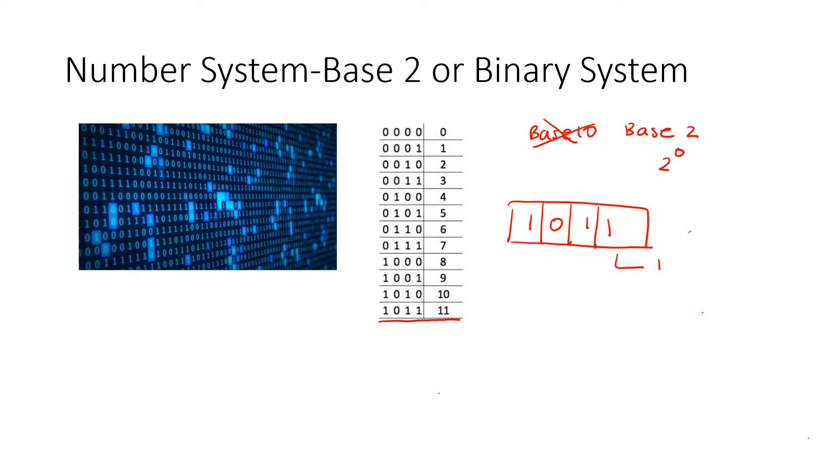Well, this would be 1 times 2 raised to power 0. This would be 1 times 2 raised to power 1. Similarly, this would be 0 times 2 raised to power 2. And finally, 1 times 2 raised to power 3.